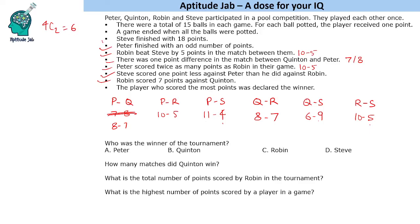This was a straightforward set. Now answering the questions: who won the tournament? Peter has 29 points. Steve is already given as 18. Quinton scores 7+8+15+6 equals 21 points. Since the total across all games is 15×6 equals 90 points, Robin has 90 minus 29 minus 18 minus 21 equals 22 points. Peter is the winner of the tournament.